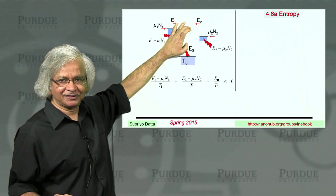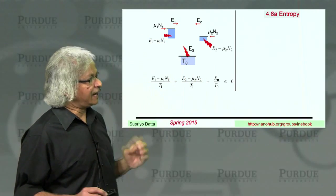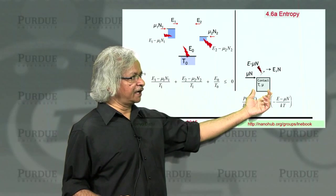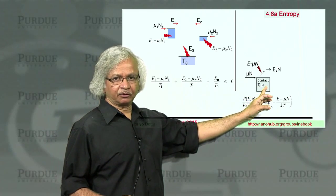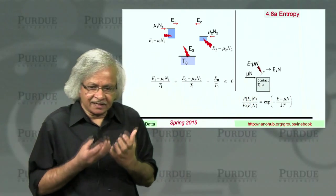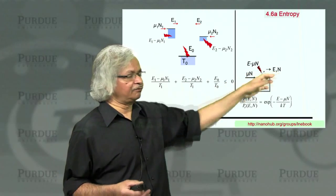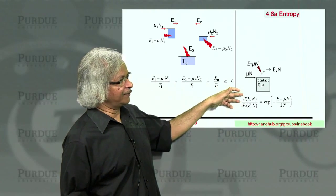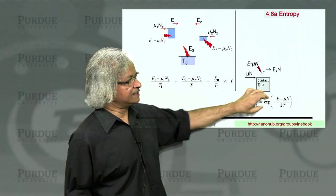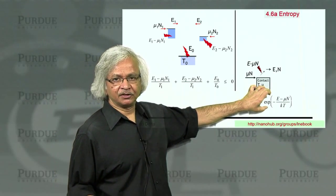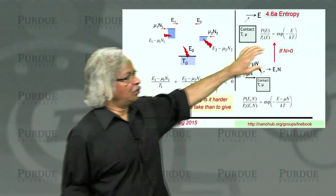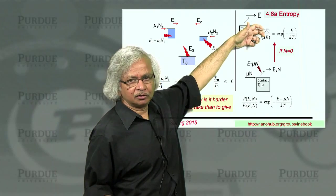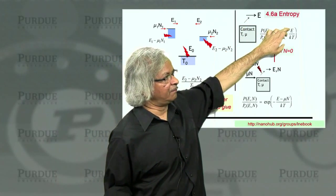It's really a property of the contacts and so you can essentially ignore the channel in this discussion. It's a property that comes from the contacts and specifically it's related to a very basic property of contacts, namely if you think of a contact at a temperature T with electrochemical potential mu and you want to take some energy E or number of electrons N from this contact, then this reverse process which wants to do the opposite, the ratio of the process you want and the reverse that you don't want is given by this exponential function.